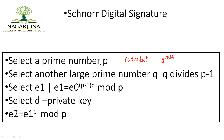The prime number you choose should be approximately 2 to the power of 1024. The next thing is to choose one more prime number called q, and q should divide p minus 1. The approximate value of q is 2 to the power of 160.